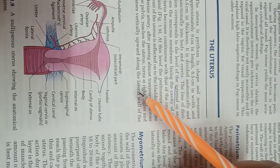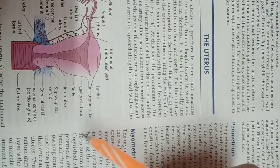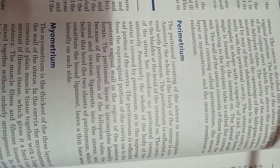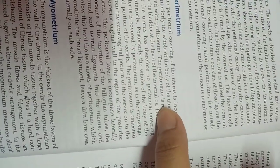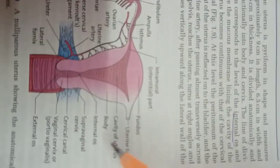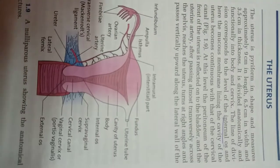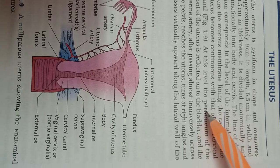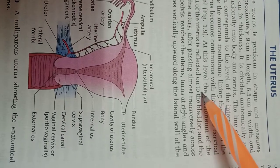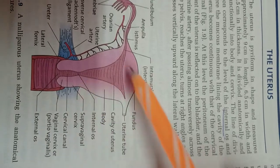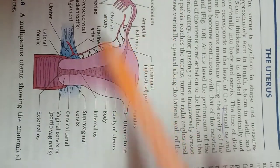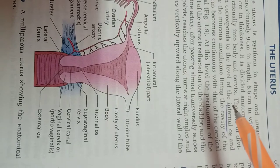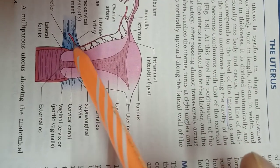The uterine artery, after passing almost transversely across the pelvis, reaches the uterus, turns at a right angle, and passes vertically upwards along the lateral wall of the uterus. The cervix is divided into vaginal and supravaginal portions. At the level of the internal os, the fold of peritoneum anteriorly is reflected onto the bladder.